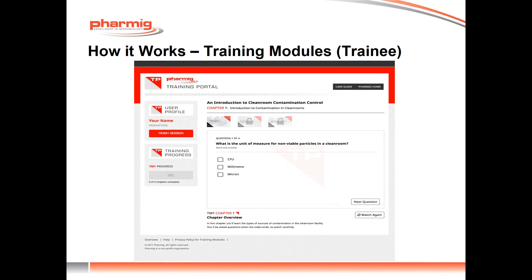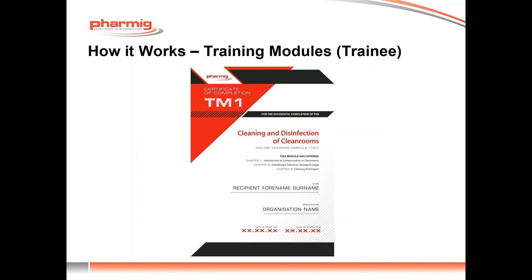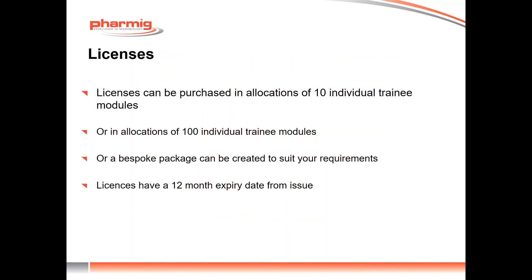On completion of all chapters within the module, trainees can then print out a certificate within the module, which meets EU GMP expectation requirements. In terms of licenses, these can be purchased in either allocations of 10 or 100 individual trainee modules, and they have a 12-month expiry from issue. In addition, there's the option to create bespoke packages to suit your requirements, and that information can be provided directly from FARMIG. The site administrator's dashboard will outline how many licenses have been allocated and how many remain, with a reminder sent when nearing full completion.